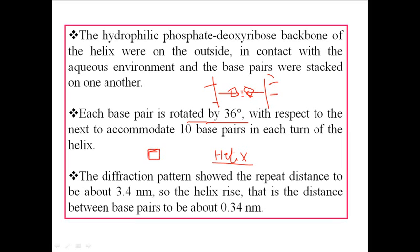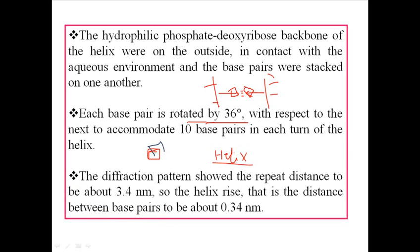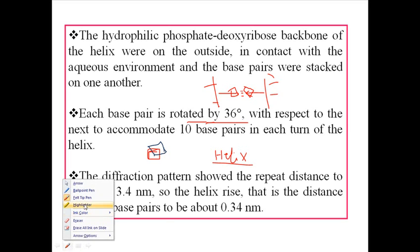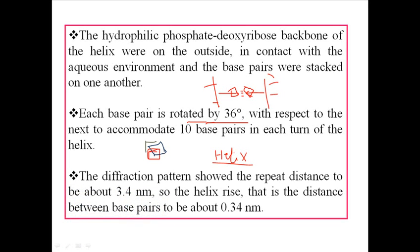Each base pair is rotated by 36 degrees with respect to the next base. So how one base is stacked on another: take the first base placed here, then the second base — let me change the color — will rotate by 36 degrees like that, and the third base will rotate by another 36 degrees. This gives a spiral nature of movement to the strand, rather than a straight line.